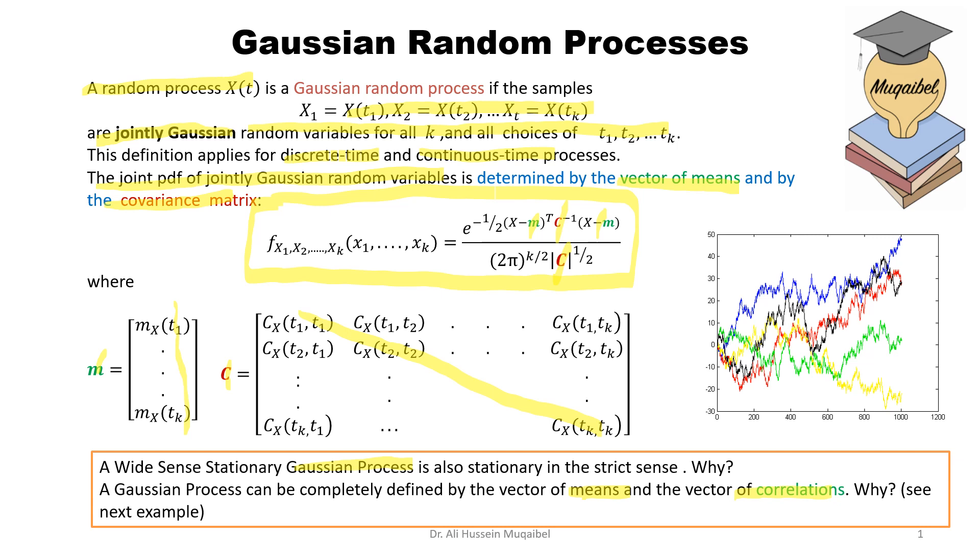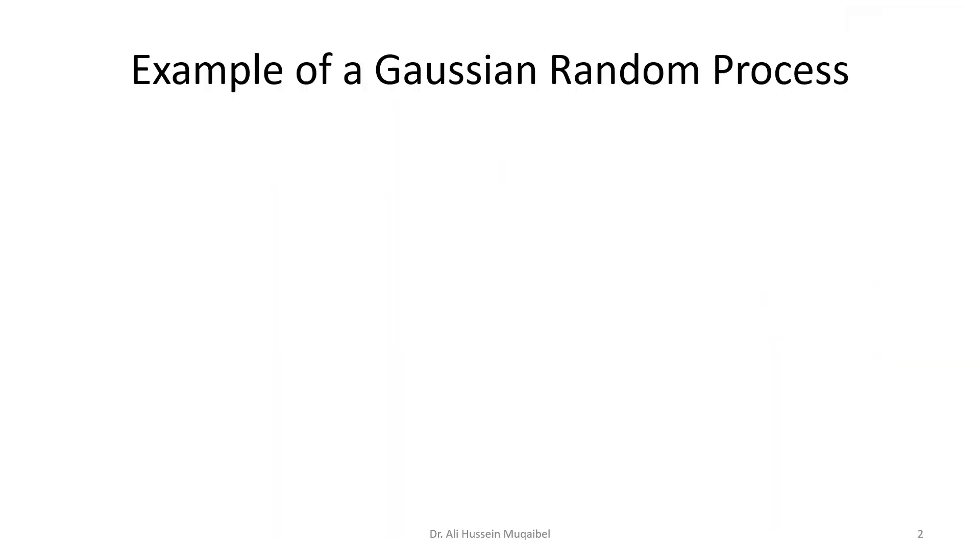Let's see the examples. Example of a Gaussian random process.